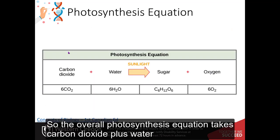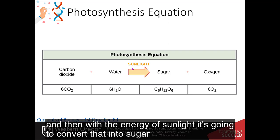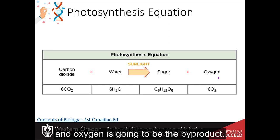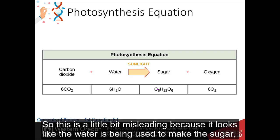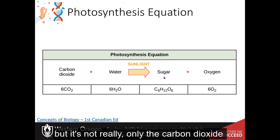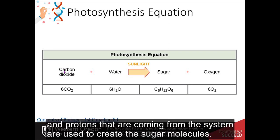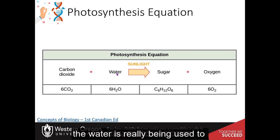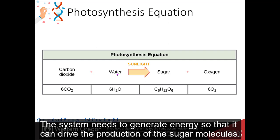So the overall photosynthesis equation takes carbon dioxide plus water, and then with the energy of sunlight, it's going to convert this into sugar, and oxygen is going to be the byproduct. So this is a little bit misleading because it looks like the water is being used to make the sugar, but it's not really. Only the carbon dioxide and protons that are coming from the system are used to create the sugar molecules. The water is really being used to generate the electrons in the system. This system needs to generate energy so that it can drive the production of the sugar molecules.